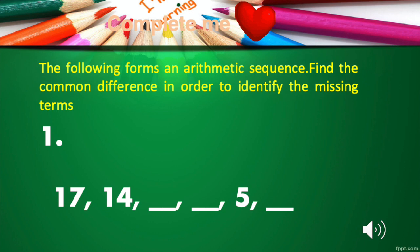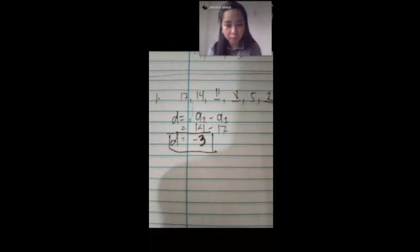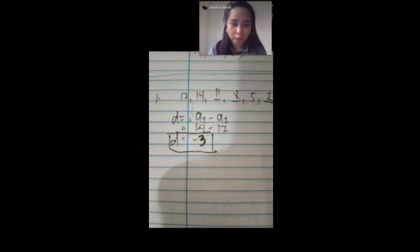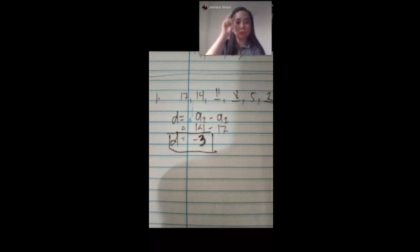For number 1: d equals a sub 2 minus a sub 1; substituting, 14 minus 17 gives negative 3. Then the missing numbers are 11, 8, and 2. Good job — the common difference is worth 1 point. For the blanks, there are 3 blanks but you get 2 check marks. Please self-check your work.